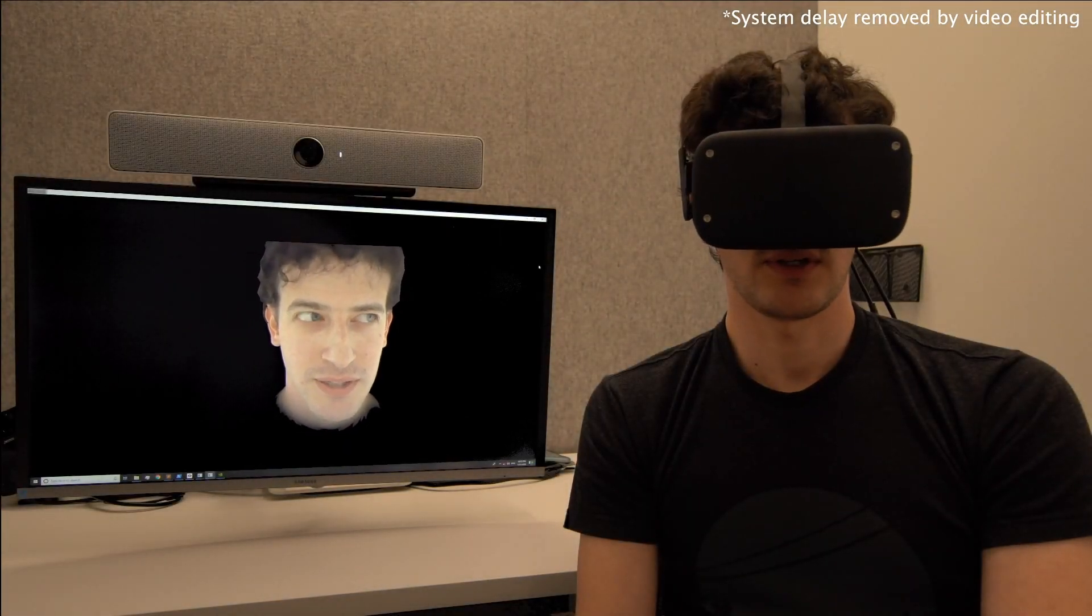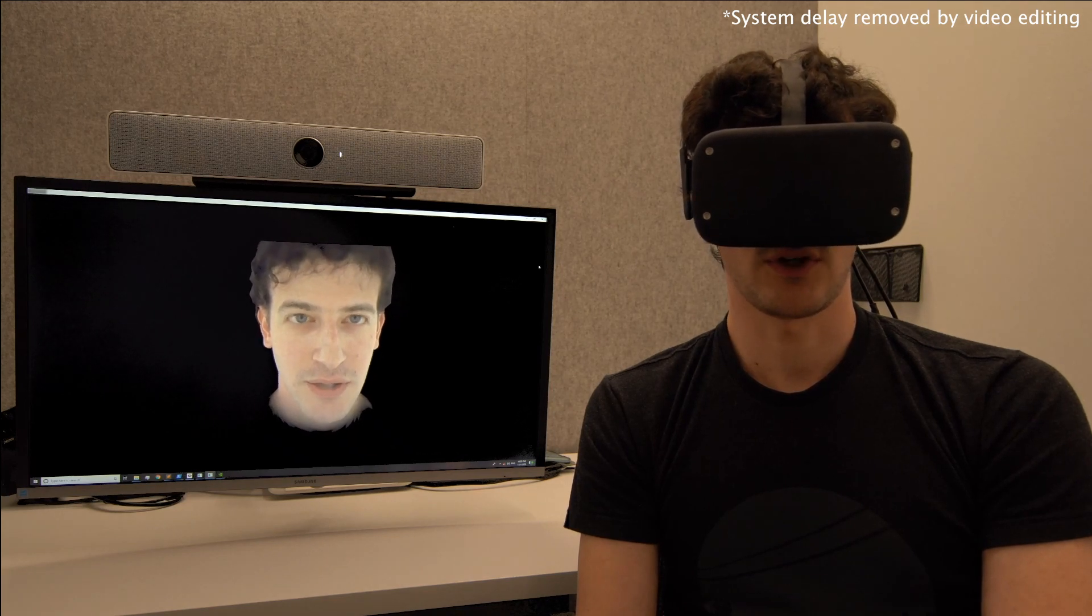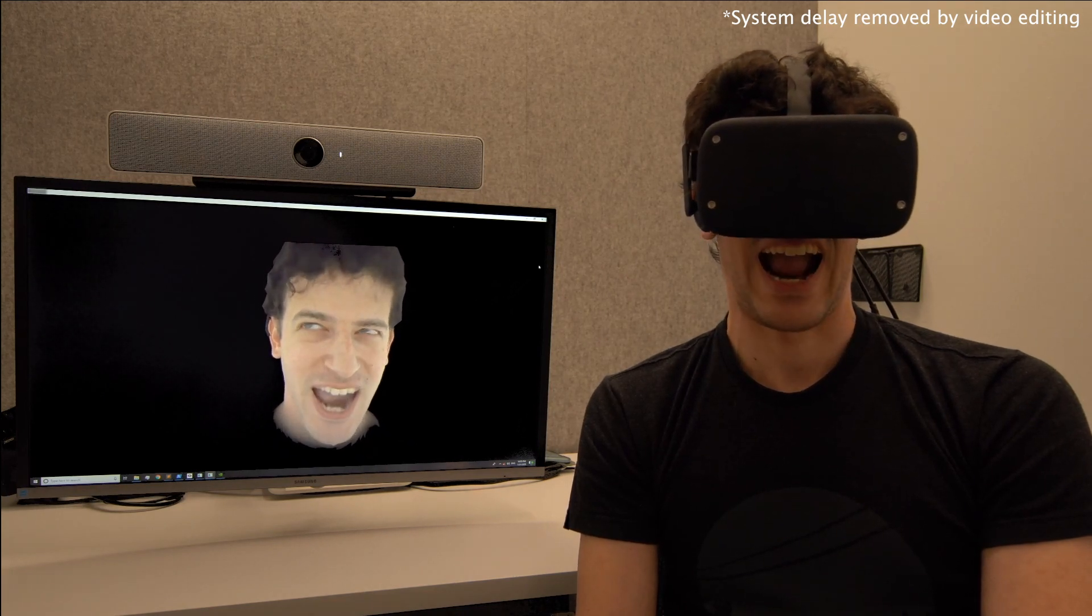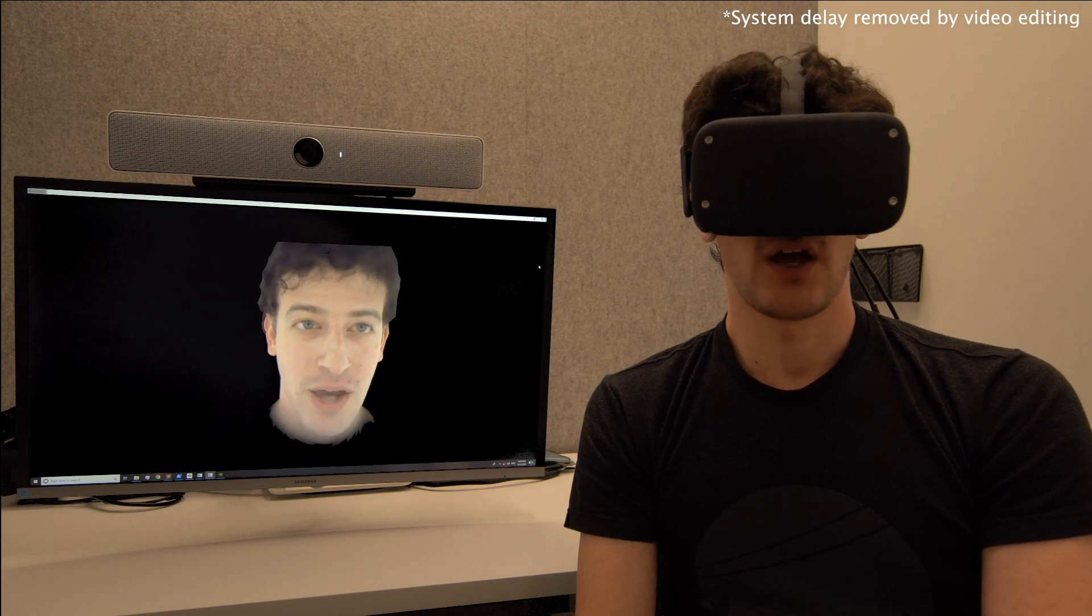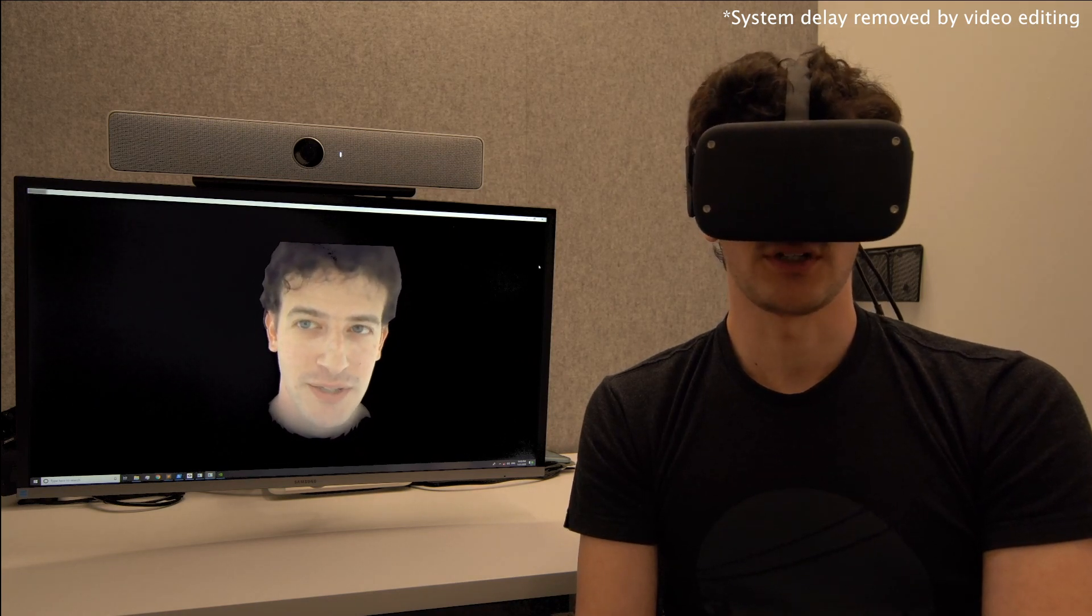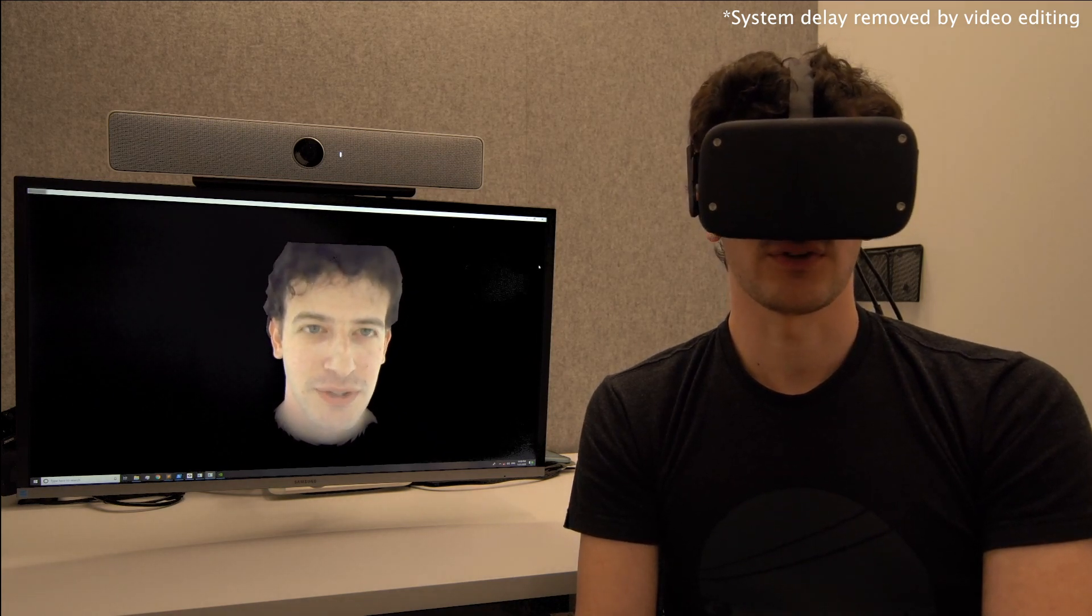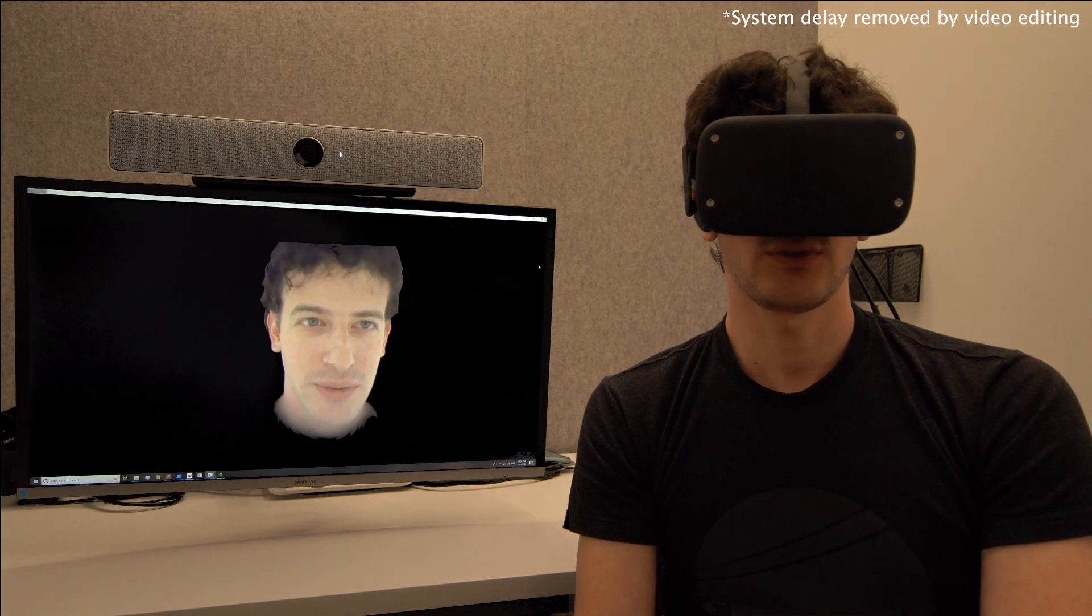So now that we have this cool avatar that can render eyes and face in all these new conditions, it would be great if we can drive it in real time, just like you're seeing my avatar do right now. I can look all around in new unseen directions while I'm talking. I can make new expressions. All of this preserving these new combinations of gaze and expression that we haven't seen before in the training data. So how do we do all this?